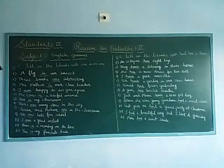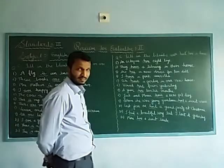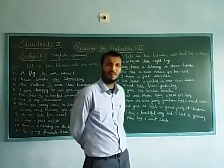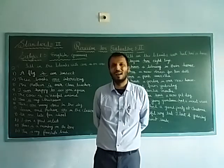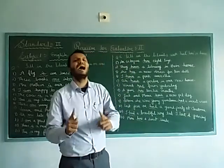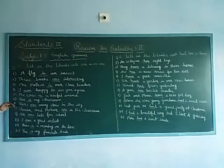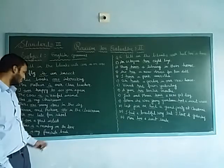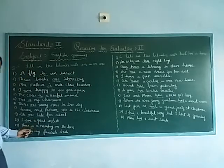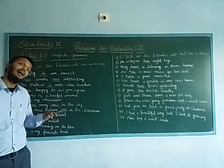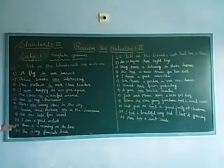Seventh number: there are many stars in the sky. They blank — the answer is 'are' — there are many stars in the sky. Eighth number: one and one blank in the class. The answer is 'are' — one and one are in the class.